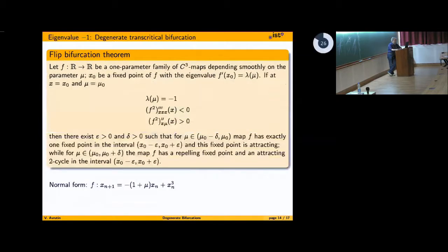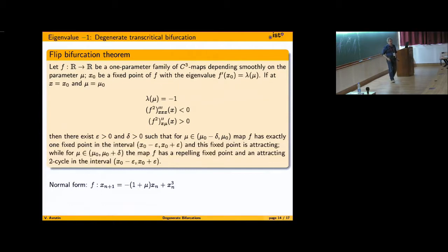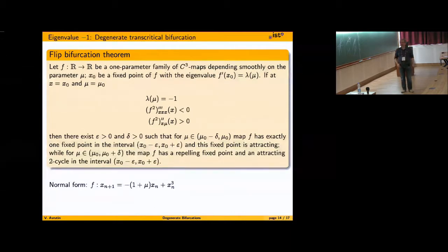Regarding the flip bifurcation — the classical stuff — the theorem about the third derivative of f² and so on, that is what you know. That is the case where we have either supercritical or subcritical flip. As before, we are asking the question: what happens if all the derivatives vanish?